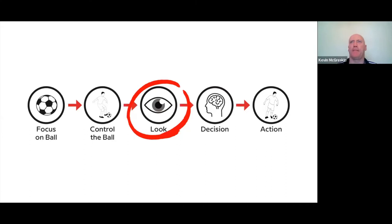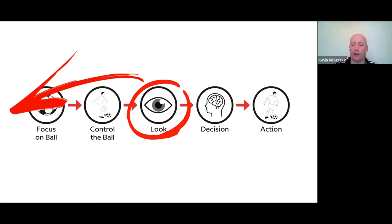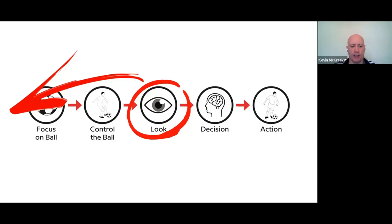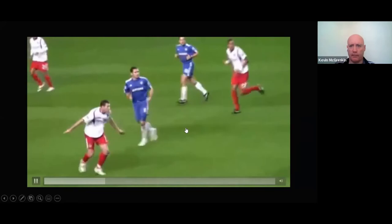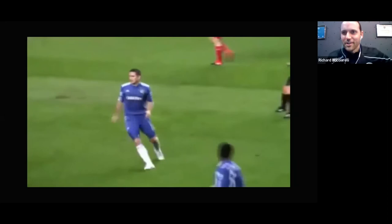The major problem for the vast majority of players is they focus on the ball, control it, and only then start looking around the playing area to decide their action. That process is far too slow. Today's focus is on how to push scanning to the front so it leads the whole decision-making process.